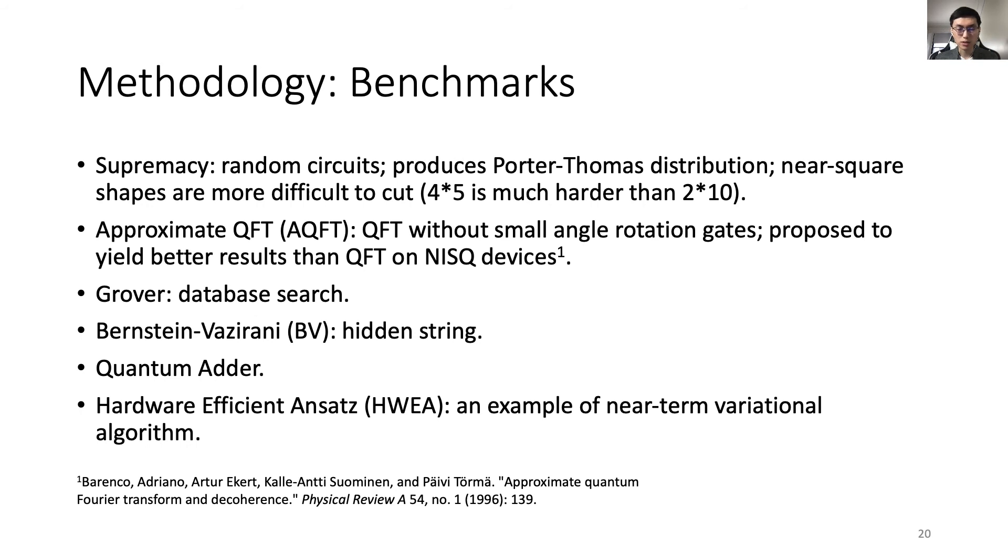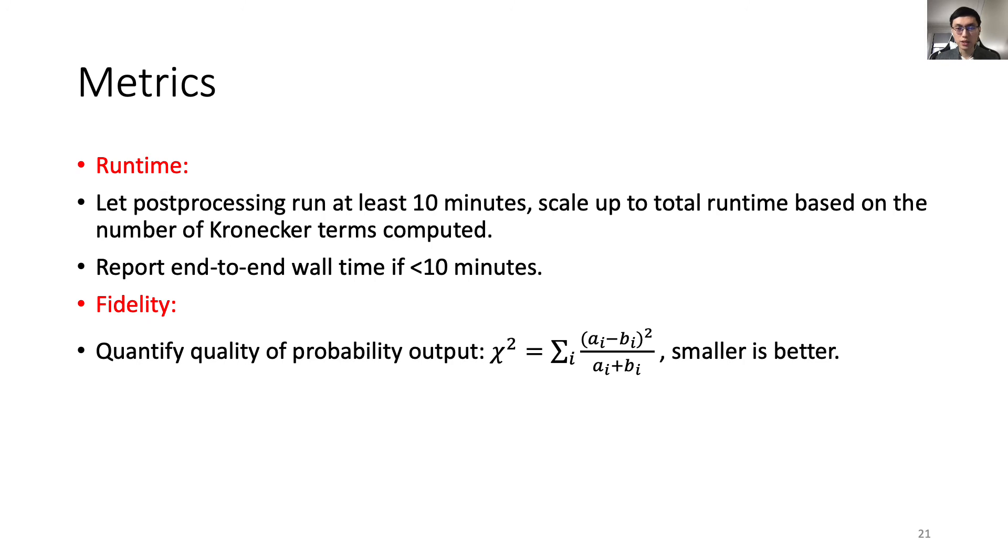Here is a list of benchmark circuits used. They represent a general set of circuits for gate-based QC platforms and promising near-term applications. To evaluate the CutQC performance, we are interested in its runtime and fidelity. To benchmark the runtime, we let the classical post-processing run at least 10 minutes before scaling up based on the total number of Kronecker terms. We just report the end-to-end runtime if the processing took less than 10 minutes. This is accurate because each Kronecker term involves exactly the same amount of classical compute, and there are no data dependencies among them. To quantify the fidelity on real quantum computers, we use chi-square to measure the distance between output and ground truth obtained via classical simulation. The smaller is better.